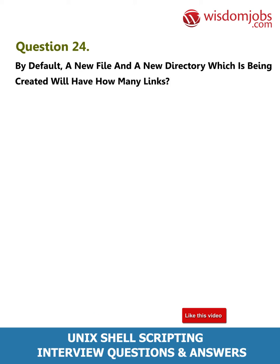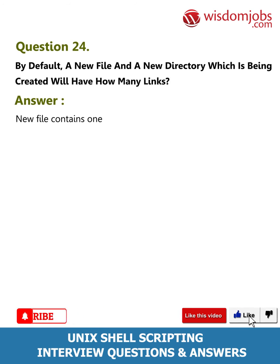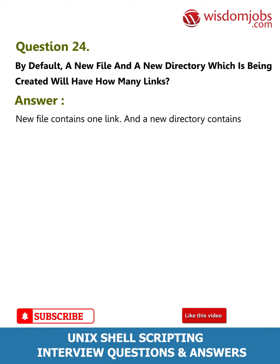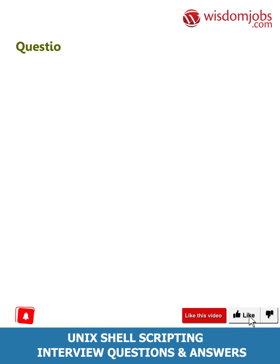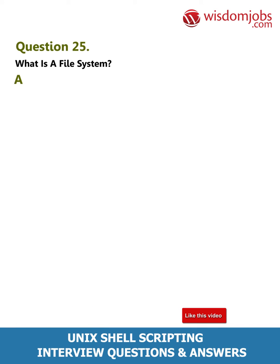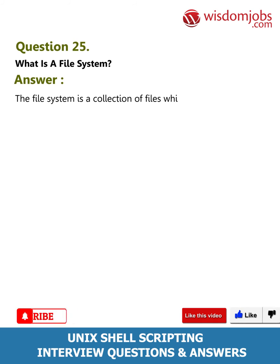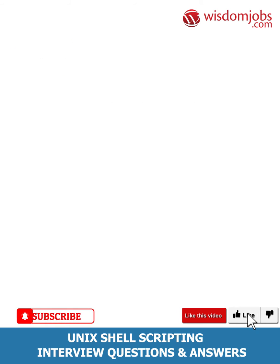Question 24: By default, a new file and a new directory which are being created will have how many links? Answer: A new file contains one link and a new directory contains two links. Question 25: What is a file system? Answer: The file system is a collection of files which contain related information of the files.